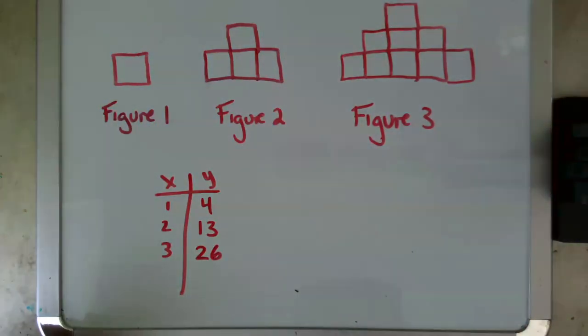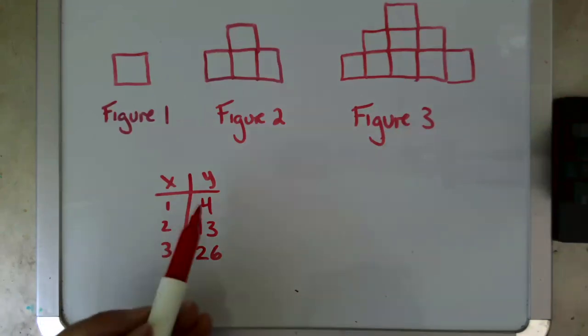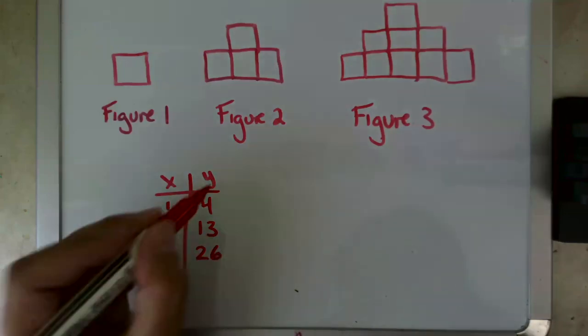And now what I would do is I would start to look for some patterns to get from four to 13. Well, not really going to do that through multiplication. So let me check through addition and that would be adding nine. And then to get from 13 to 26, that would be adding 13.